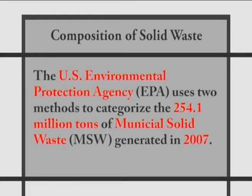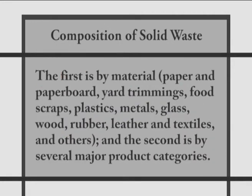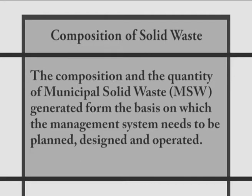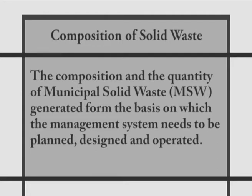The U.S. Environmental Protection Agency (EPA) uses two methods to categorize the 254.1 million tons of municipal solid waste generated in 2007. The first is by material — paper and paperboard, yard trimmings, food scraps, plastics, metals, glass, wood, rubber, leather, and textiles, and others. The second is by several major product categories: containers and packaging, non-durable goods (e.g., newspapers), durable goods (e.g., appliances), food scraps, and other materials. The composition and quantity of municipal solid waste form the basis on which management systems need to be planned, designed, and operated. In India, municipal solid waste differs greatly with regard to composition and hazardous nature when compared to solid waste in Western countries.